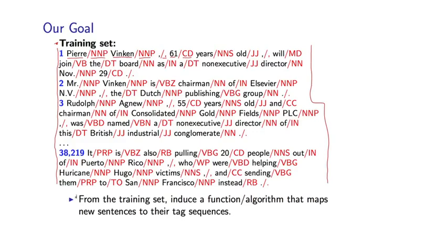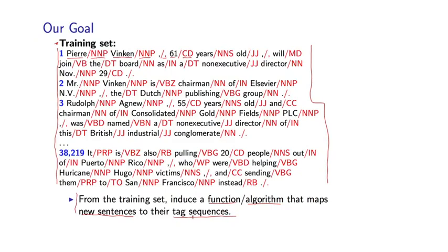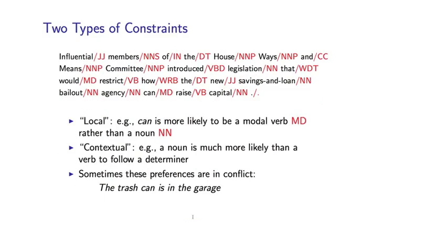Given this training set, we want to learn a function that will take a new sentence as input and map it to a tag sequence — treating this as a supervised learning problem. To develop intuition for building such a model, I want to talk about two different types of constraints that play a role in part-of-speech tagging: local versus contextual constraints.